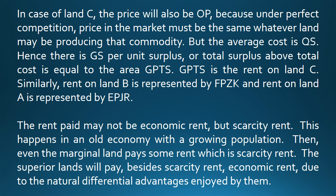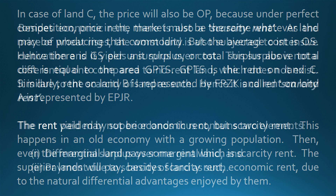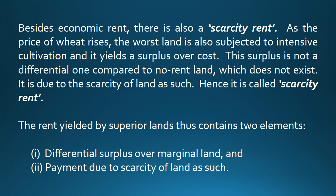The rent paid may not be economic rent, but scarcity rent. This happens in an old economy with a growing population. Then even the marginal land pays some rent, which is scarcity rent. The superior lands will pay, besides scarcity rent, economic rent due to the natural differential advantages enjoyed by them. As the price of wheat rises, the worst land is also subjected to intensive cultivation and it yields a surplus over cost. This surplus is not a differential one compared to no-rent land — it is due to the scarcity of land as such. Hence it is called scarcity rent. The rent yielded by superior lands thus contains two elements: one, differential surplus over marginal land; and two, payment due to scarcity of land as such.